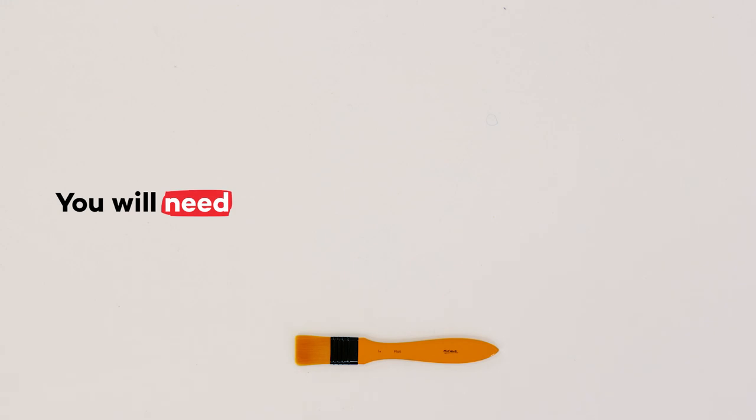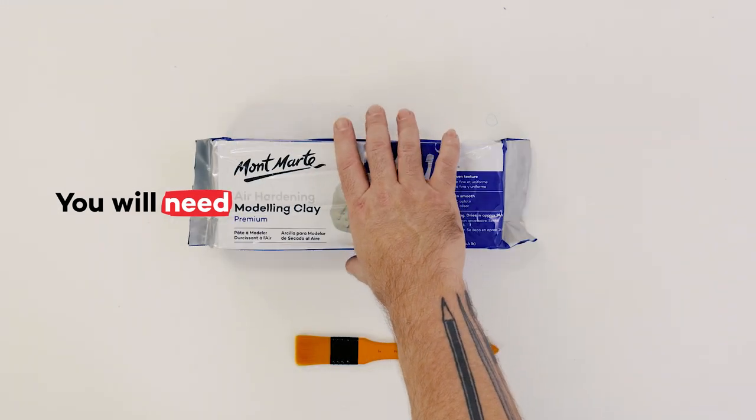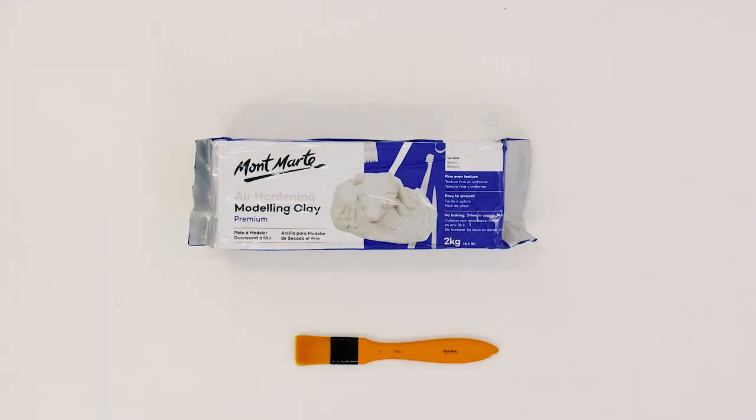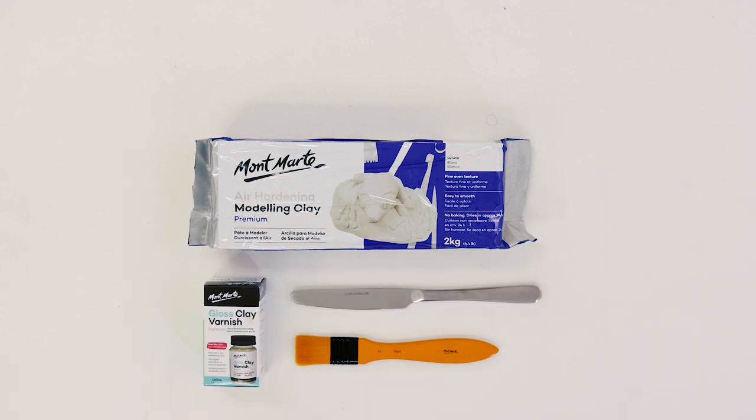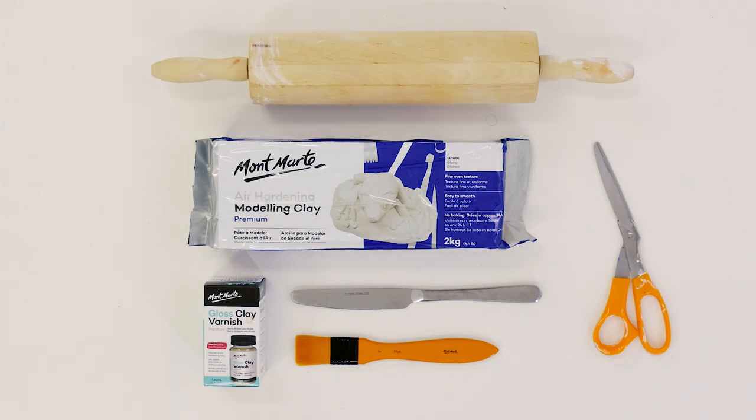If you'd like to create this palette we'll be using a 2kg block of white air dry clay, some clay varnish, a butter knife to model our palette, some scissors, a rolling pin, and some cling film.